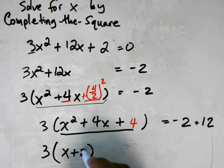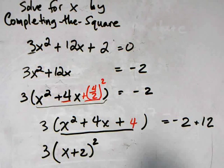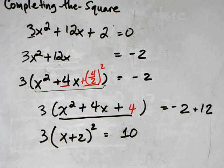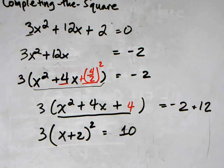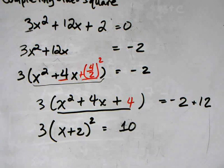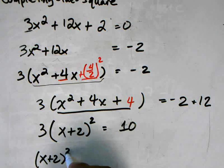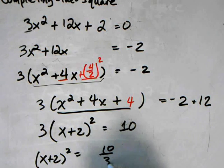This is 3, and then we factor all of this: it's going to be (x + 2)² = 10. If you're interested in just the completing the square part, this is effectively done, but we can actually proceed further and continue to solve. I'm going to divide both sides by 3, so I get (x + 2)² = 10/3.